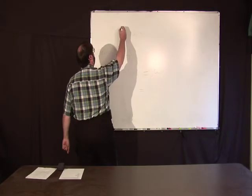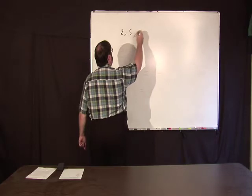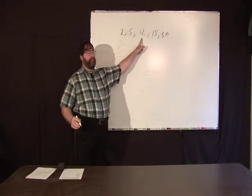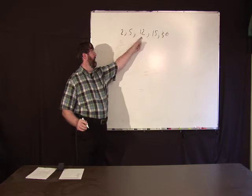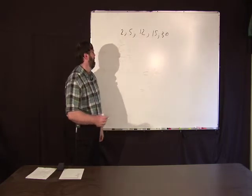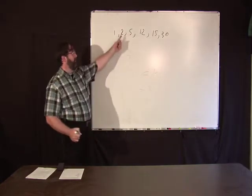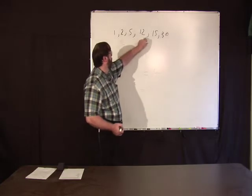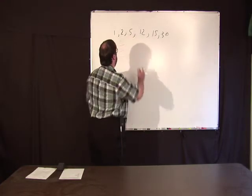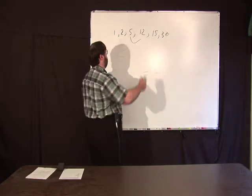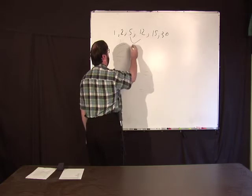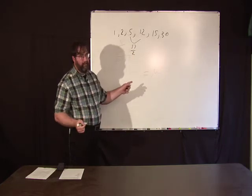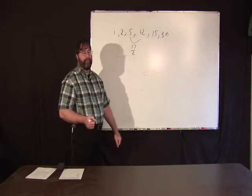Let's say you have a data set like this: 2, 5, 12, 15, and 30. Since there's an odd number, the median is 12 — exactly half are below it and half are above it. What if we added another number — 1? Now we have an even number of values: 1, 2, 5, 12, 15, 30. By convention, you take the middle two values — 5 and 12 — and take their average: 17 divided by 2, so the median is 17/2. Exactly half the data is below it and half above. That's the median — another measure of central tendency.